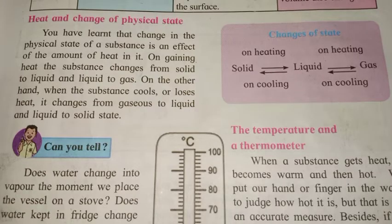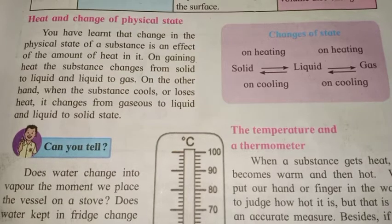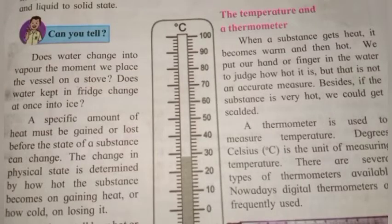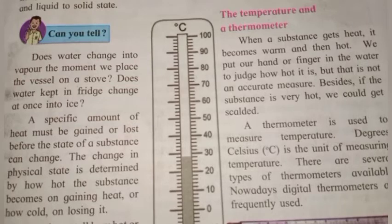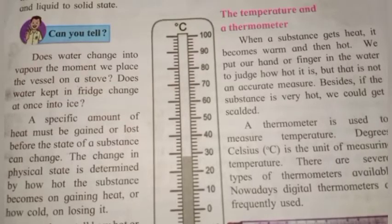Changes of state of substances take place because of a change in temperature — you can say it is the effect of heat. Now, boiling of water or conversion of water into ice is not a quick process; it takes some time. When any substance gets heat, it first becomes warm, and then after some time it becomes hot.